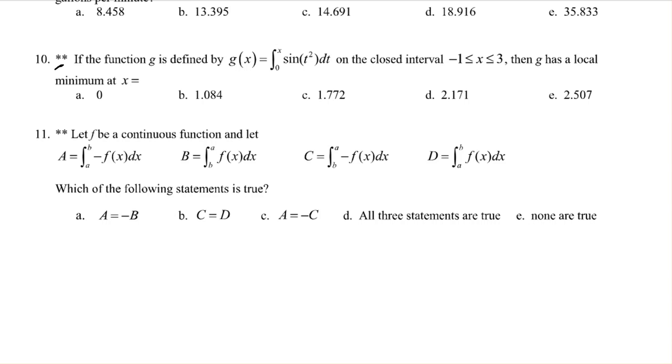Kind of like that accumulation FRQ where I had to show my work and justify. I guess I could take the derivative of this and find critical numbers, right? Critical numbers are when the first derivative is zero. We should be able to take the derivative of this—that would be the second fundamental theorem of calculus. The derivative would be sine of x squared.